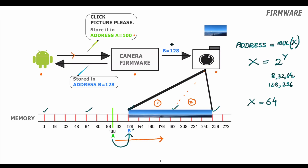We aligned the memory address to 128. In this example, assuming memory units are in bytes, we say we did 64-byte alignment of the memory address. After the hardware is done storing the image, the firmware sends a confirmation back to the camera application which also includes the address B at which the image can be found.